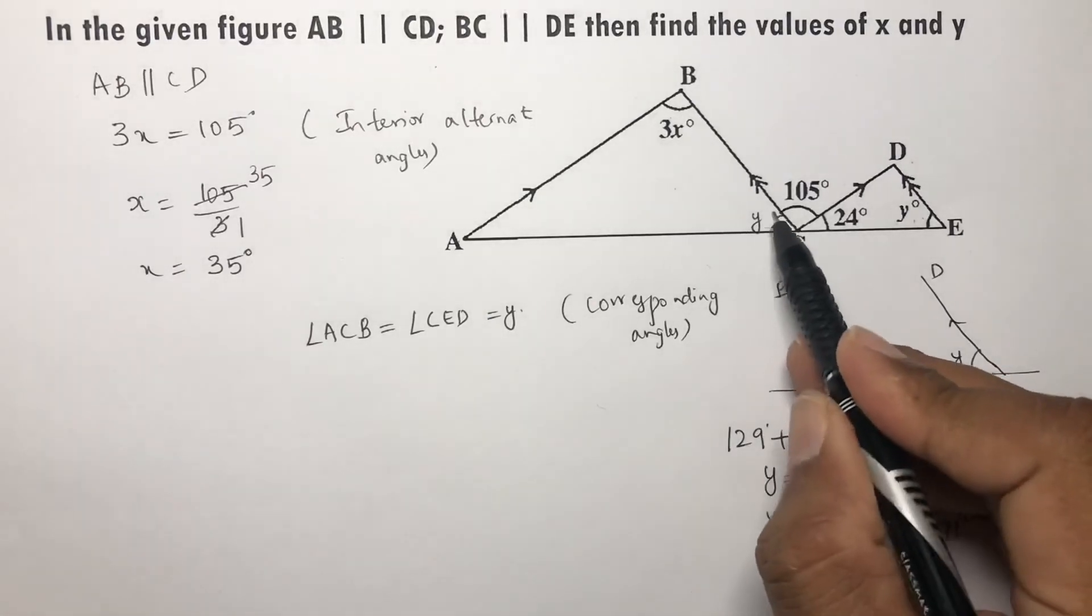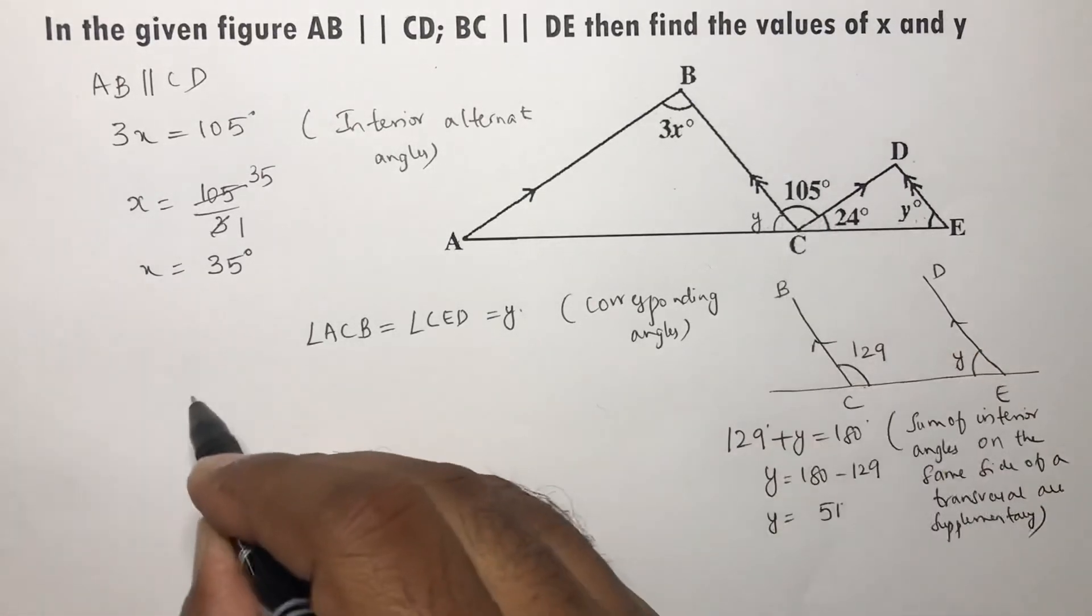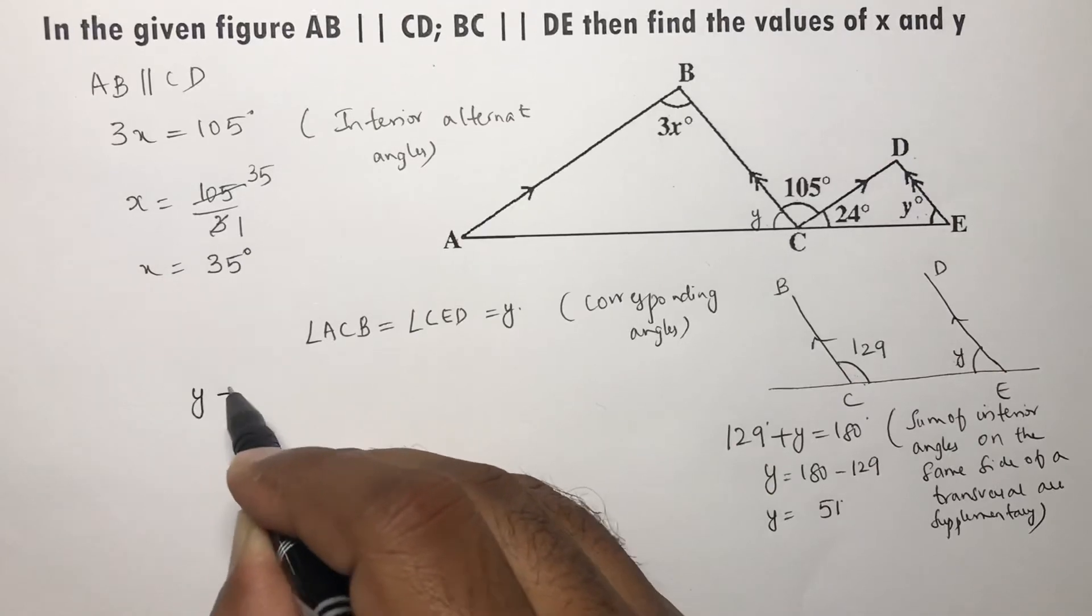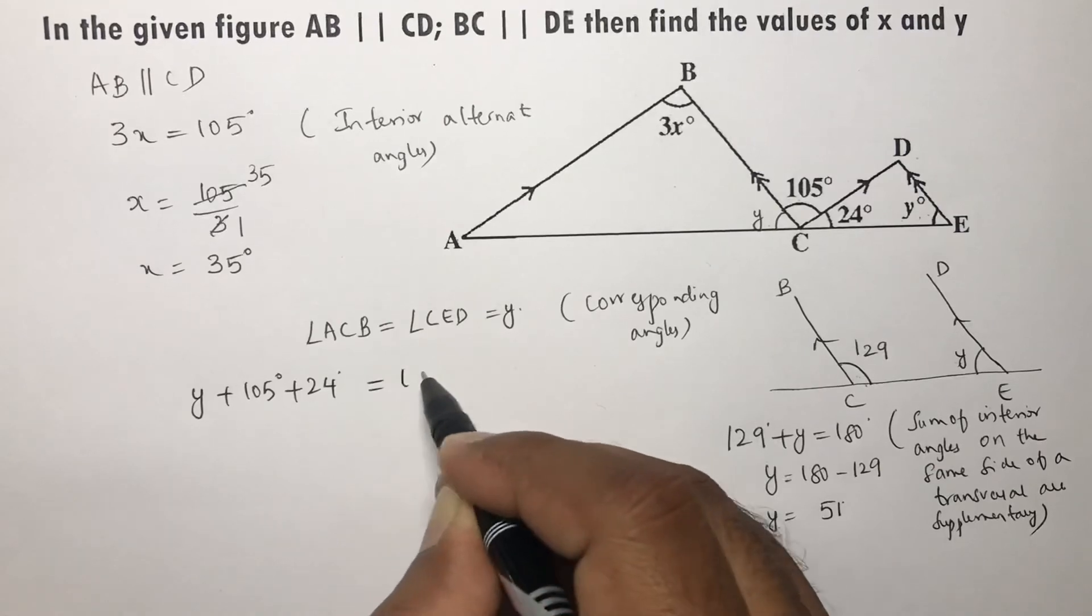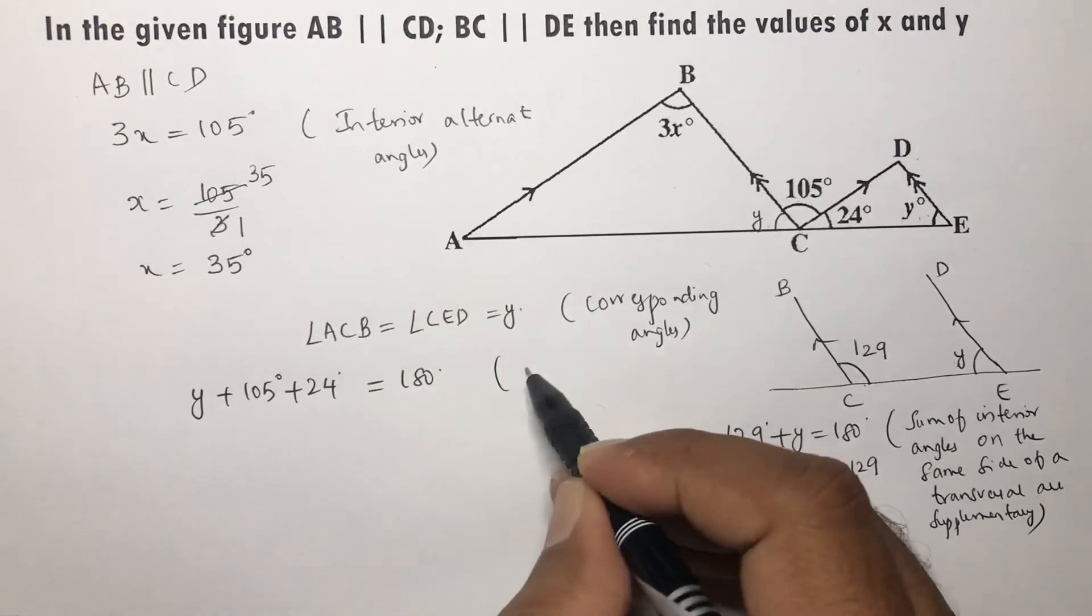Now, if this is y, you can take these three angles on a straight line. y plus 105 plus 24 equals 180 because of straight angle property.